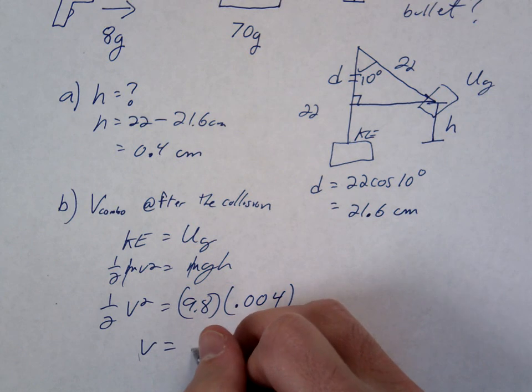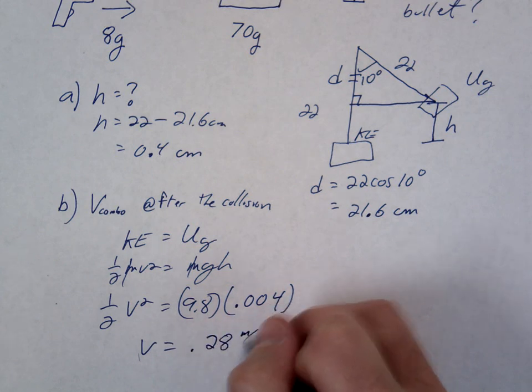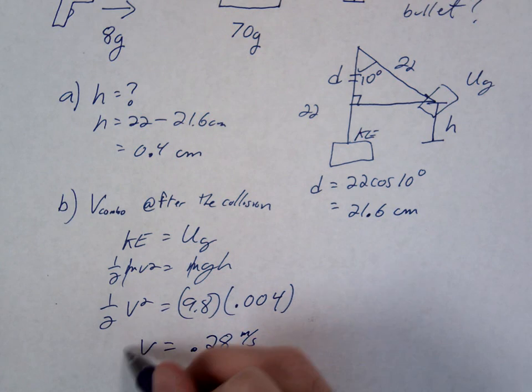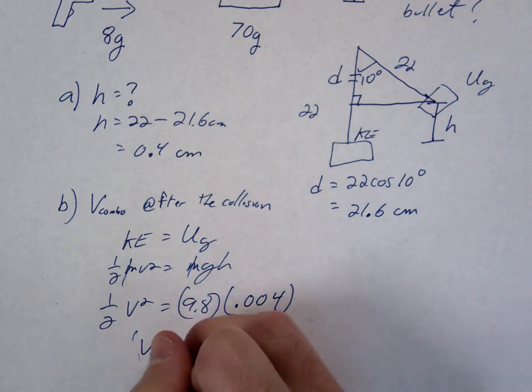So the combo velocity is not going to be that fast. What's our V? 2.8. So this is the combo velocity.